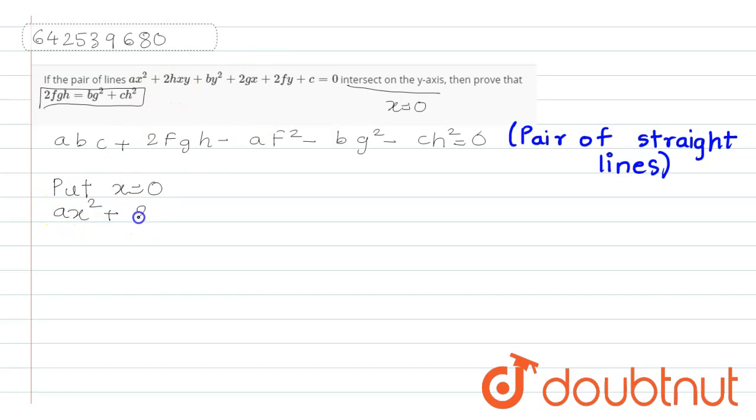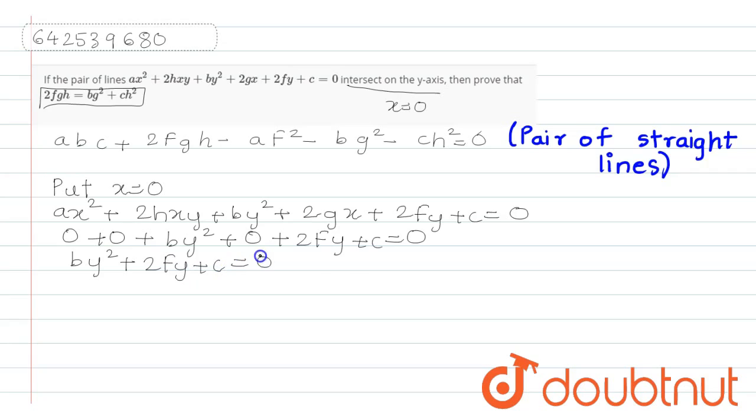Let's consider the equation. This is your equation: Ax square plus 2Hxy plus By square plus 2Gx plus 2Fy plus C equals 0. This becomes 0, this becomes 0. This becomes By square plus 0 plus 2Fy plus C equals 0. Then it becomes By square plus 2Fy plus C equals 0.